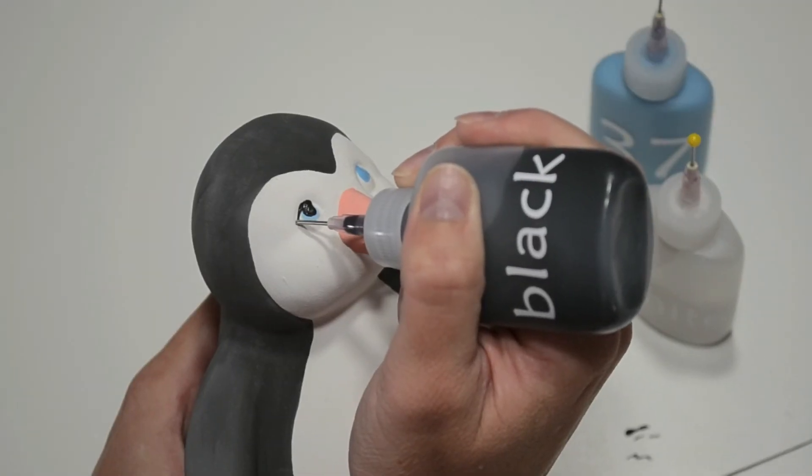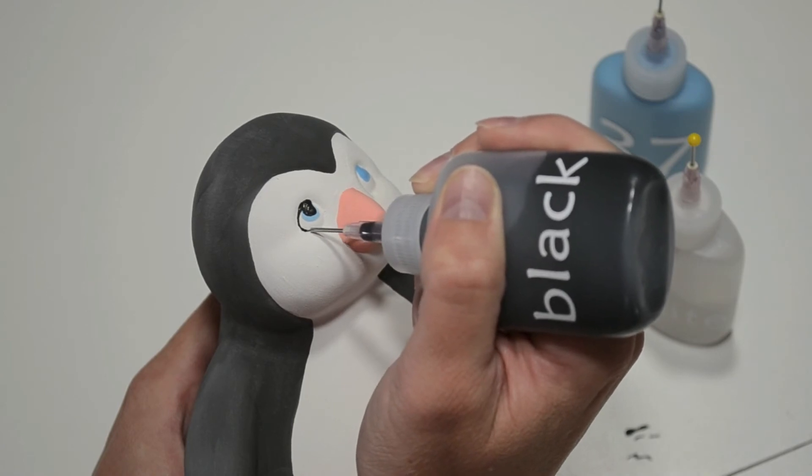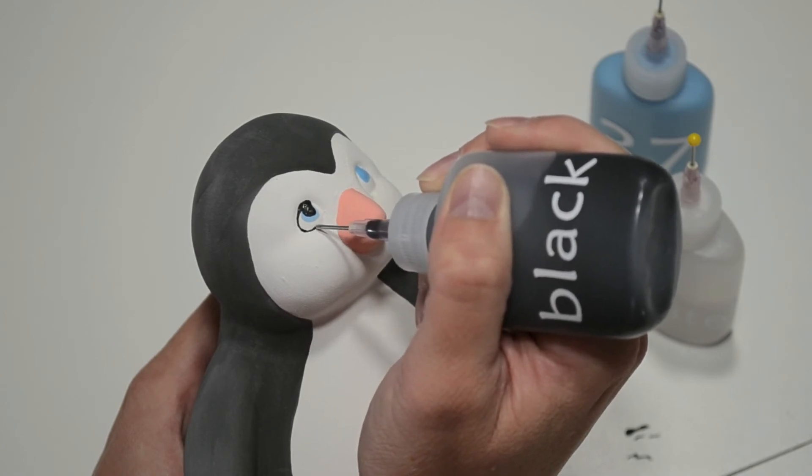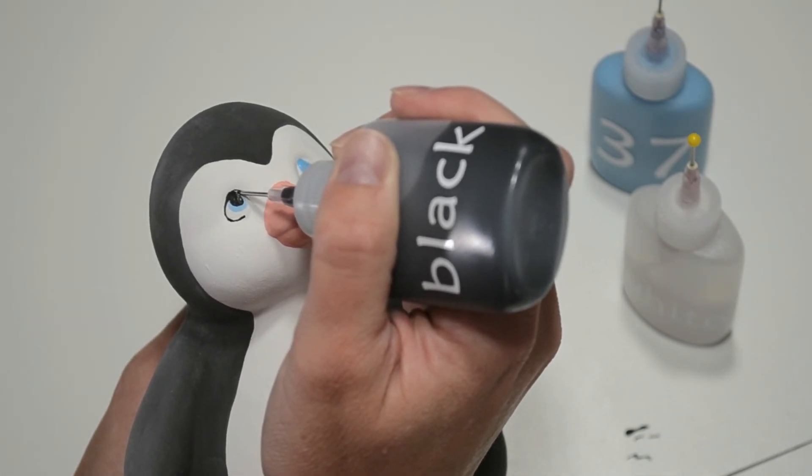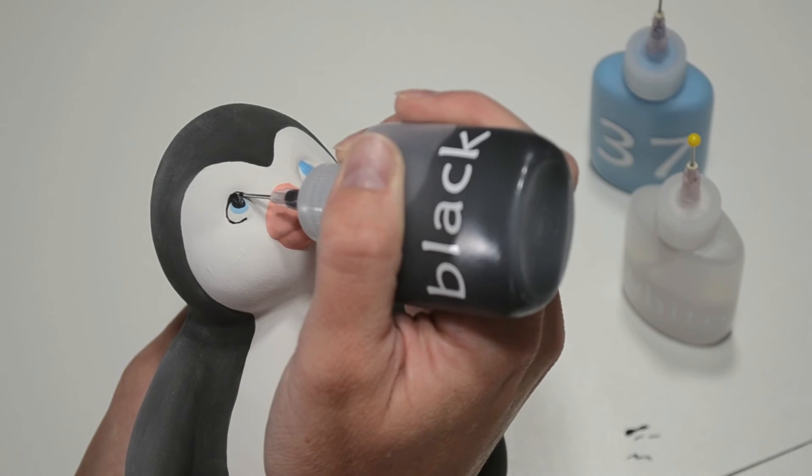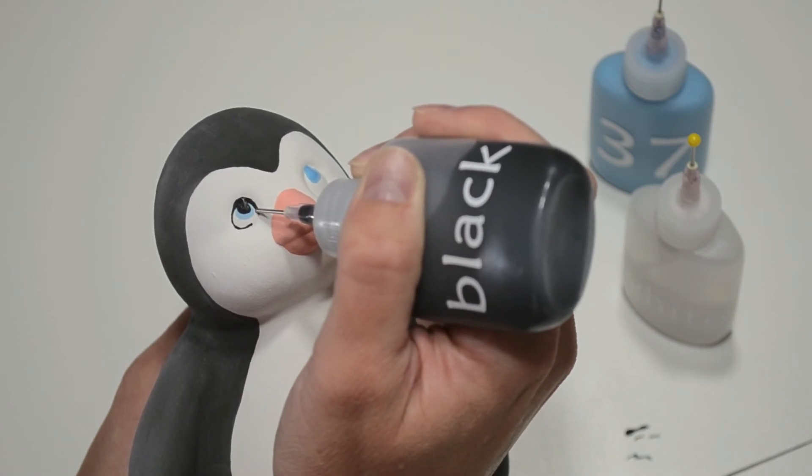Now I'm going to outline the eyes in black so they stand out from the white face. Again, I'm applying very light pressure to the fun writer and taking my time to ensure a thin, even line. I'm amazed at how well this little guy is holding still - he's not even blinking.